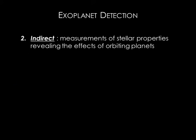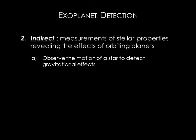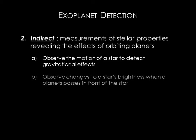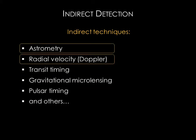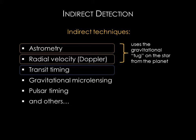Under the indirect category, there are two major approaches to finding and studying exoplanets. First, we can observe the motion of a star to detect the tiny gravitational effects of orbiting planets. And second, we can observe changes in a star's brightness that occur when one of its planets passes in front of it. In this lecture, we'll discuss astrometry, the radial velocity technique, and transit timing. With the transit timing technique, astronomers watch for a dip in brightness as a planet passes in front of its parent star.